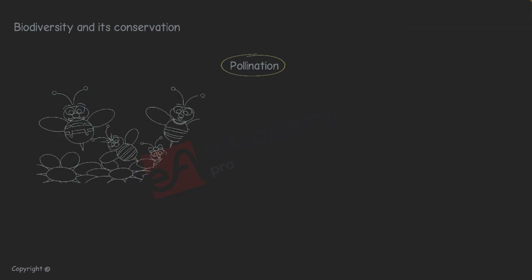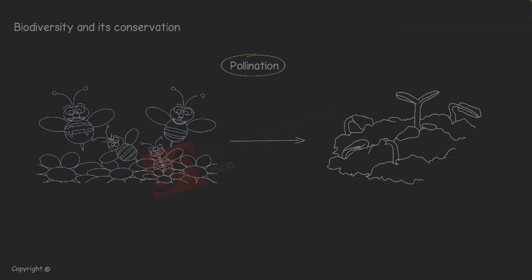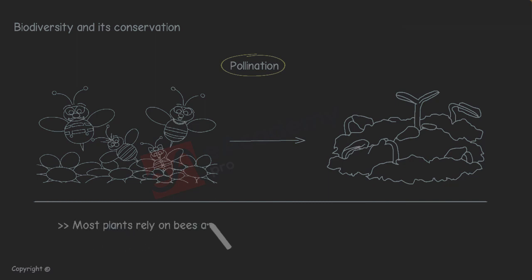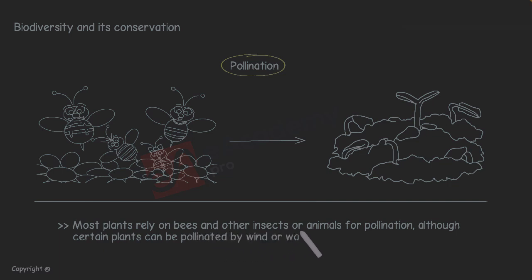Sometimes bees that are bred from a big colony in a huge hive also gather pollen on purpose as they collect the nectar. This makes pollination more frequent and effective in generating seeds from the plants. Most plants rely on bees and other insects or animals for pollination, although certain plants can be pollinated by wind or water.